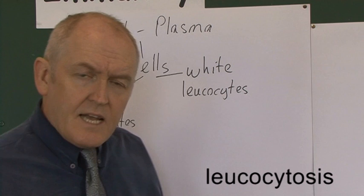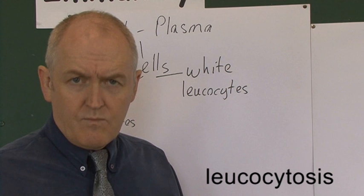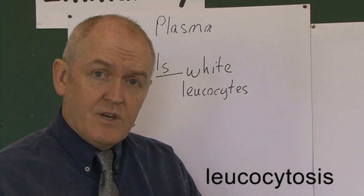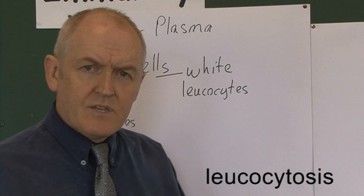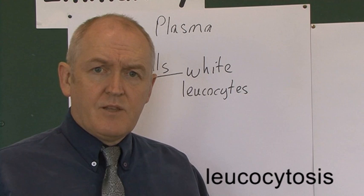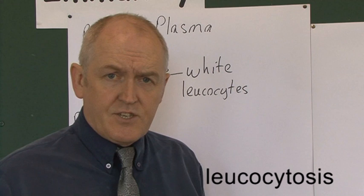A leukocytosis is an increase in the number of white blood cells. Because the white blood cells are involved in fighting infection, if someone has a leukocytosis — there's a test called a differential white cell count where we can count the number of leukocytes — if that's increased, that's an indicator, most commonly, of infection. When there's infection in the body, the body cleverly increases the number of leukocytes to see off and kill off the infection.